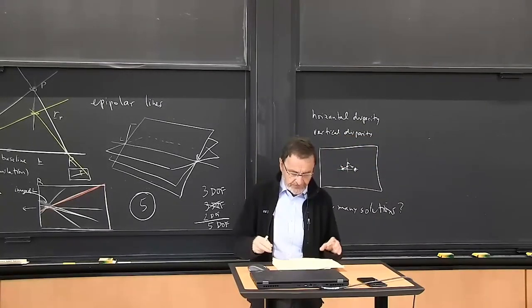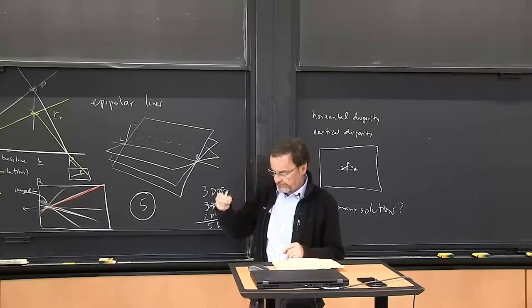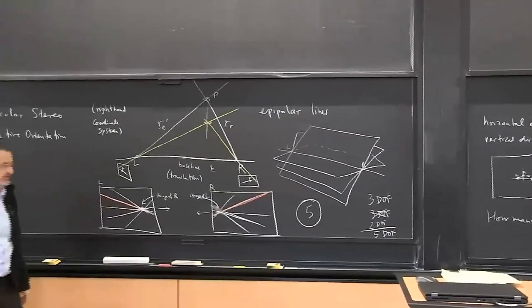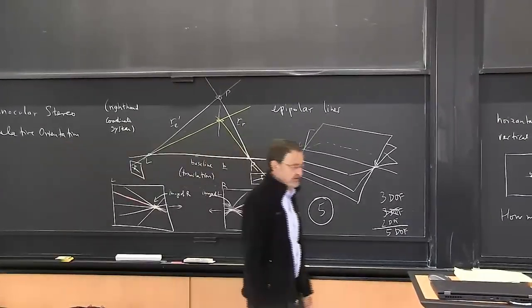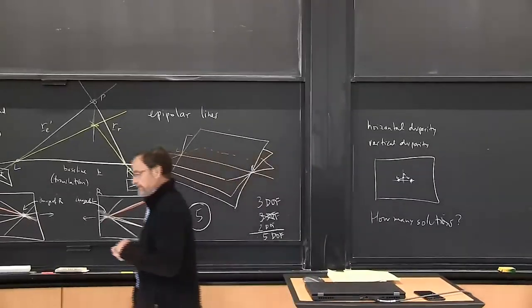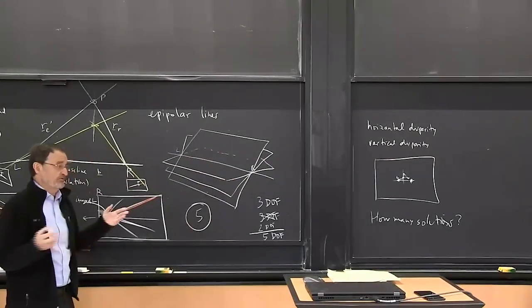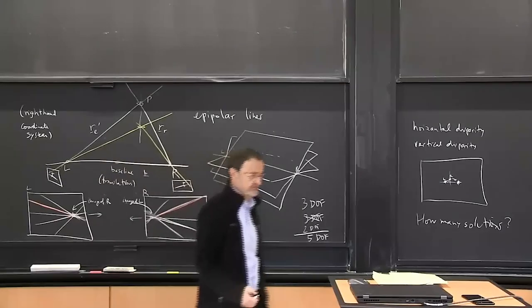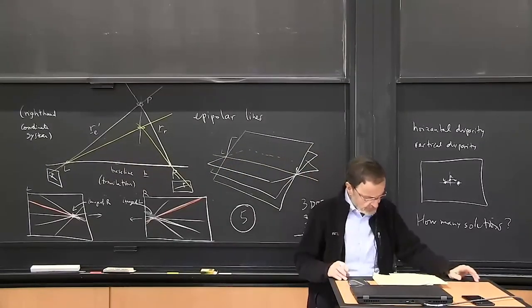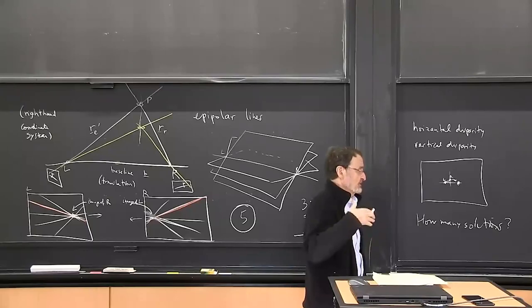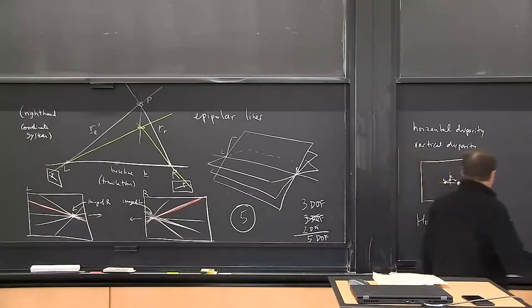Roughly speaking, we're dealing with second-order equations and we end up with seven second-order equations — these five plus two more having to do with the baseline being a unit vector. By Bezout's theorem, we might have as many as 2^7 = 128 solutions, which is kind of scary. That's also one reason why you typically don't use just five correspondences — you use more to try to get rid of that ambiguity. The true answer, which took almost a century to establish, is 20 solutions.